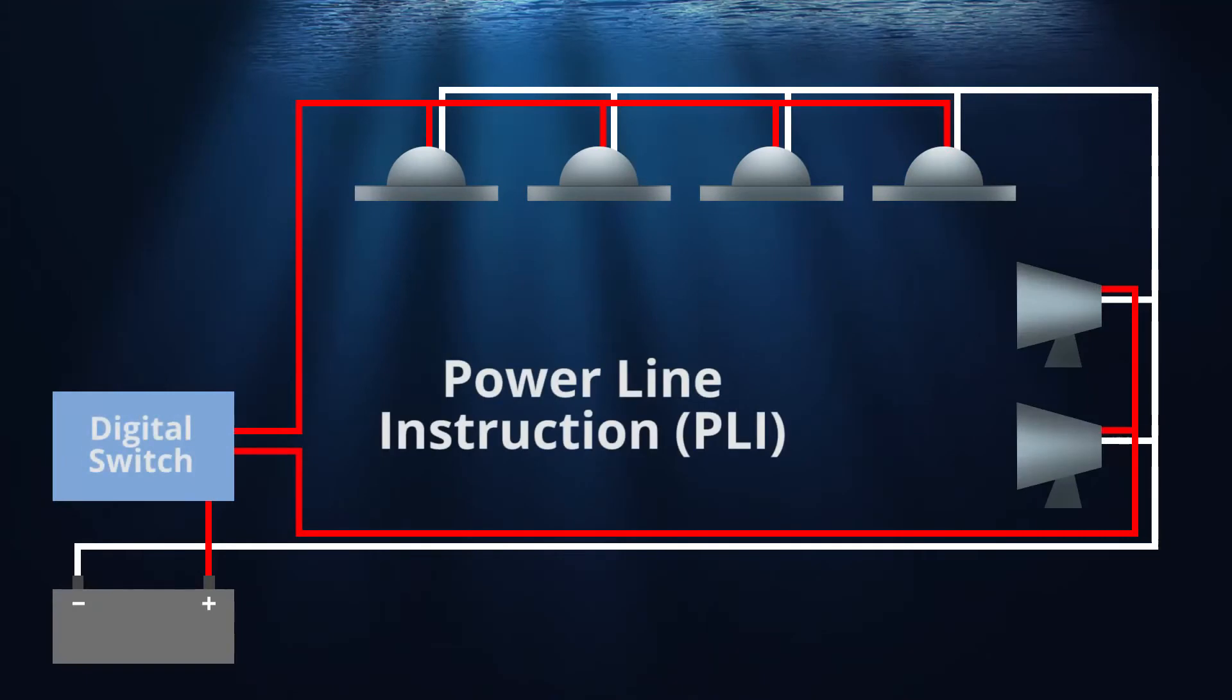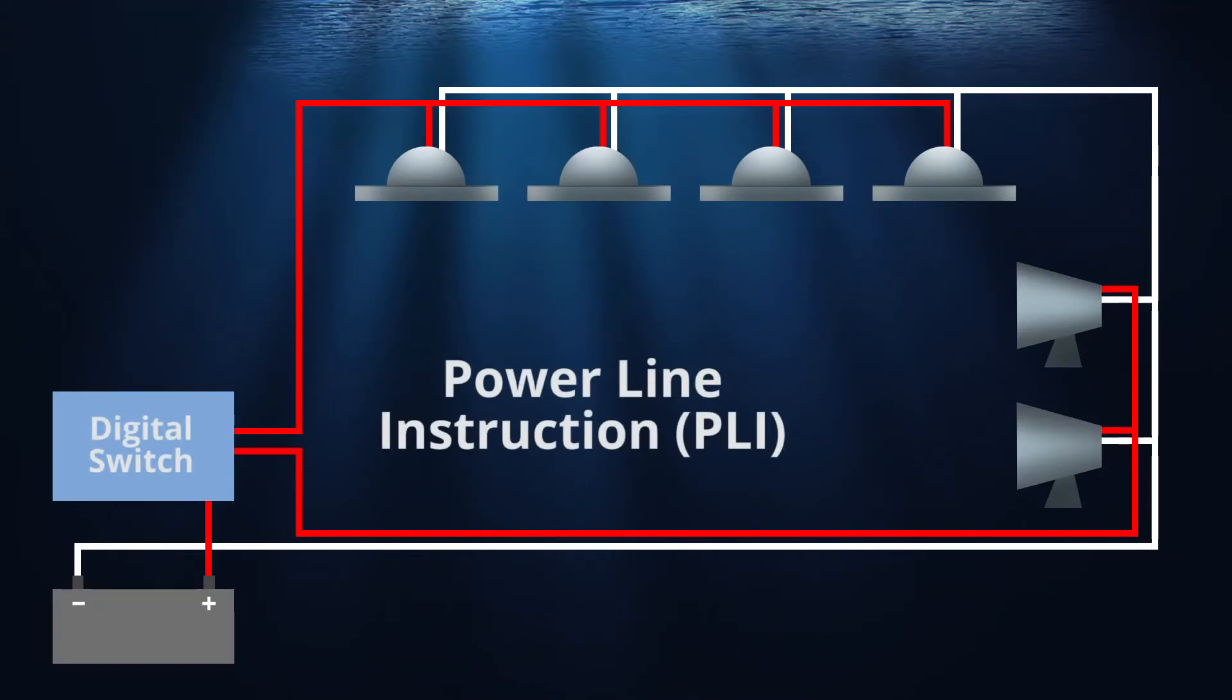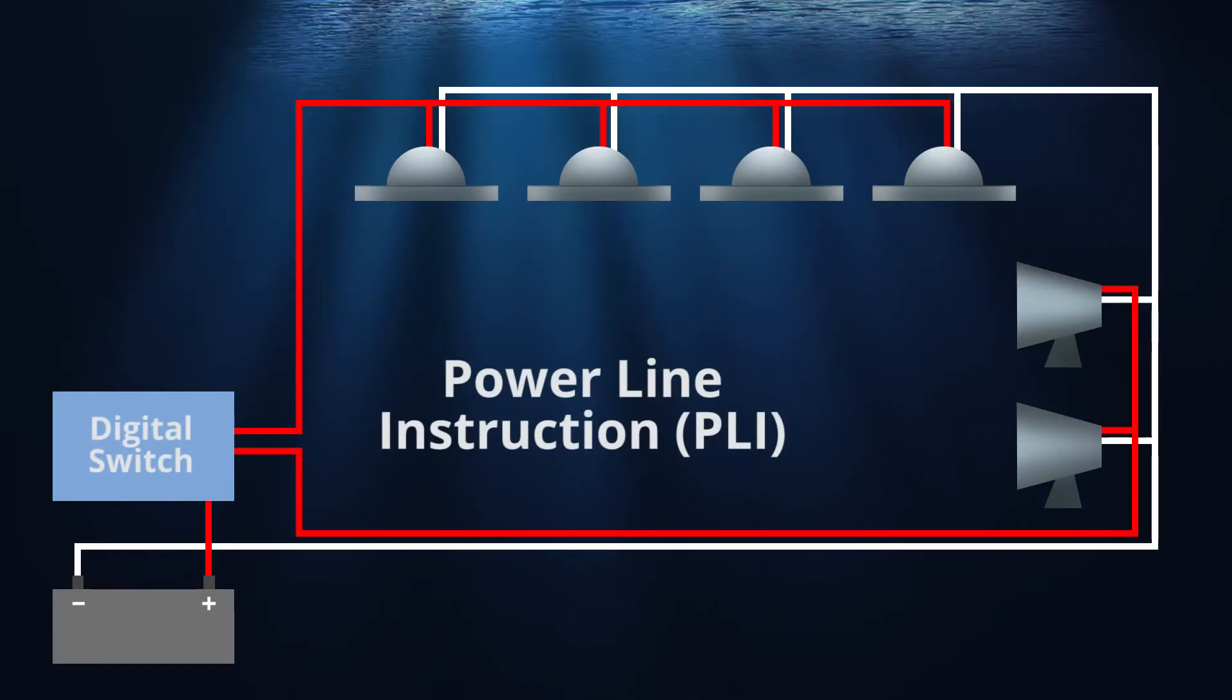With Lumitech's power line instruction technology and a compatible digital switching system, lighting controls can be initiated anywhere onboard the vessel. The commands are converted to a 32-bit message and sent to the light over the power wires. Specialized circuitry in the light initiates a 2-bit error correction on the incoming message and then processes and executes the signal.